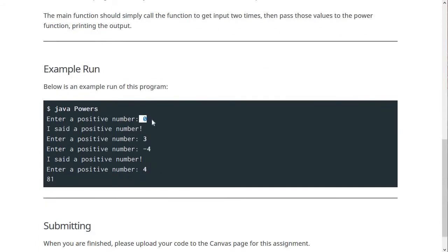So, for example, if you put in 0 at first, it'll scold you to put in a positive number. And then when you finally put in a positive number, it'll move on. Now, this is asking for the second positive number and we put in negative 4. So it asks us to do it again. And then we put in positive 4 and then it prints 3 raised to the 4 power, which is 81.